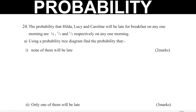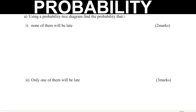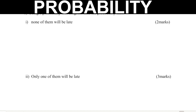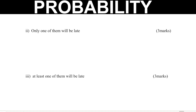Let's solve this question on probability. The probability that Hilda, Lucy, and Caroline will be late for breakfast on any one morning are 1/4, 1/3, and 1/5 respectively. Part A: using a probability tree diagram, find the probability that: 1. None of them will be late, 2. Only one of them will be late, and 3. At least one of them will be late.